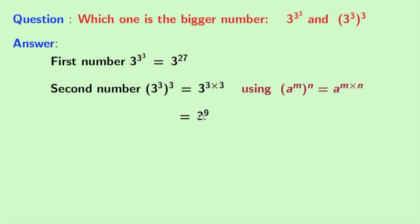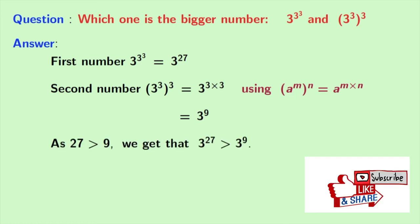So, we have 3^9 as the second number. Now, we all know that 27 is greater than 9.